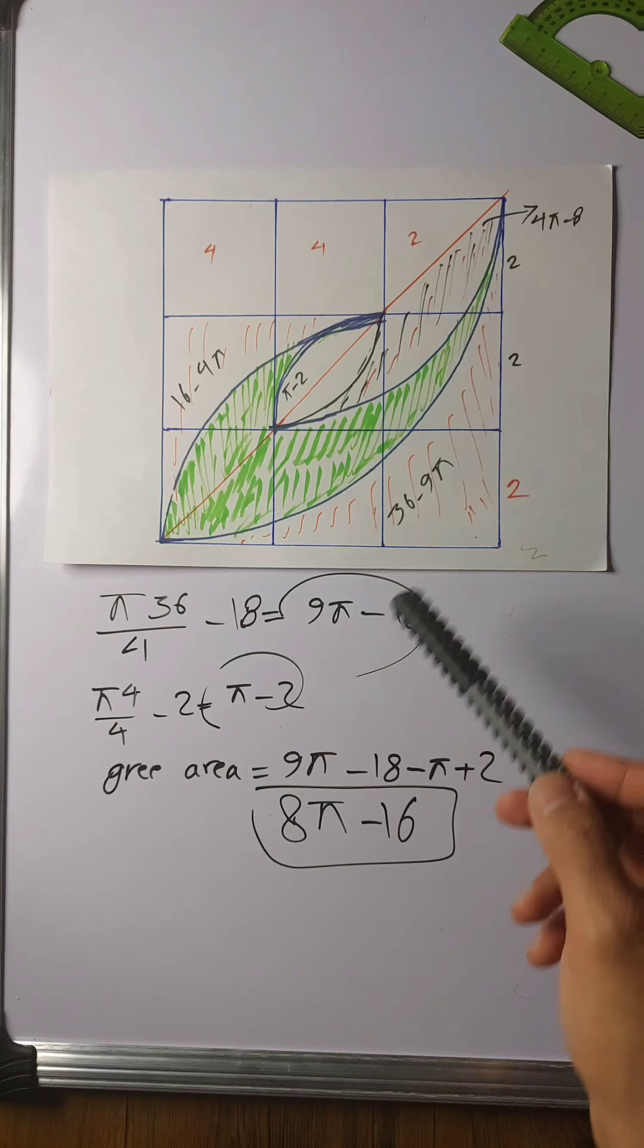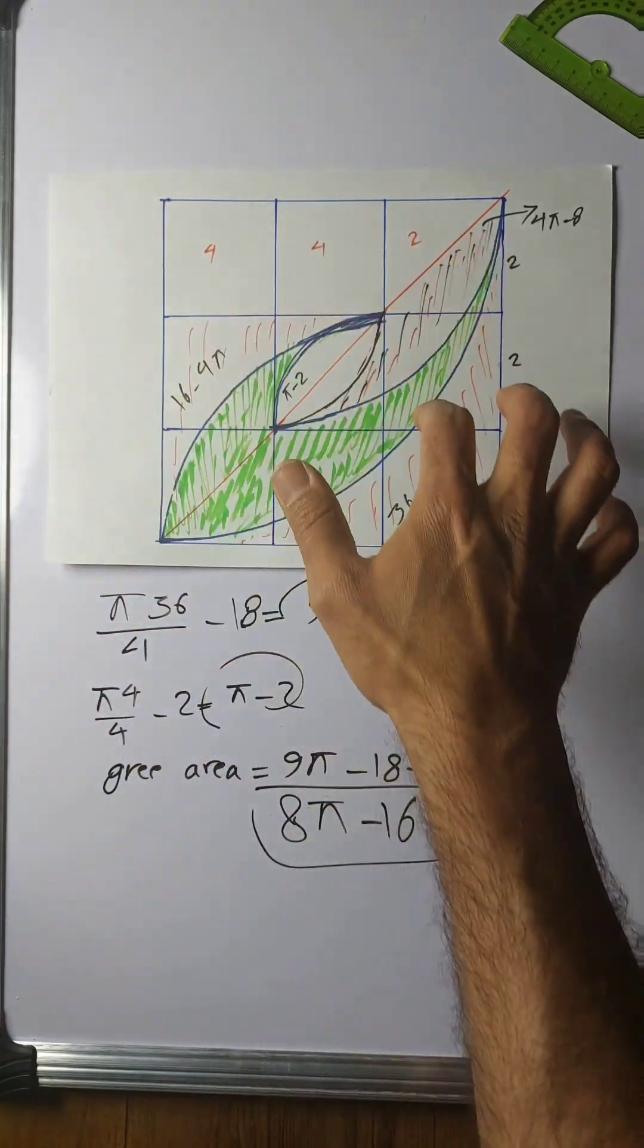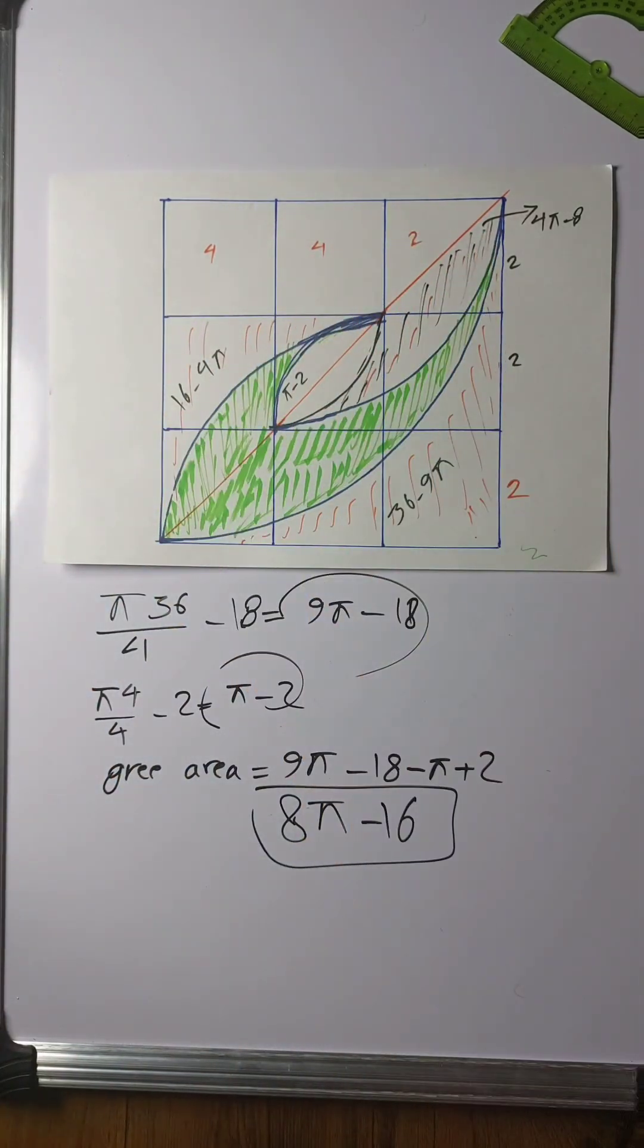The more detailed approach is to find all these little unshaded areas and then subtract it from the whole square. So make sure to check the longer version of this video below. I think that's going to wrap it up for today. See you on our next video on Prime Logic. Make sure to like, comment, and subscribe.